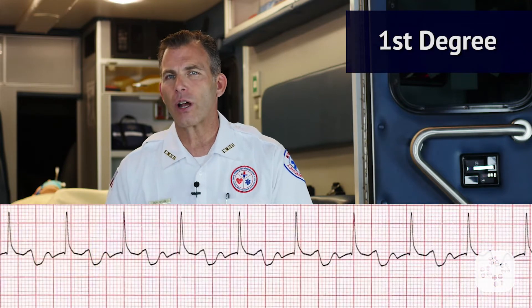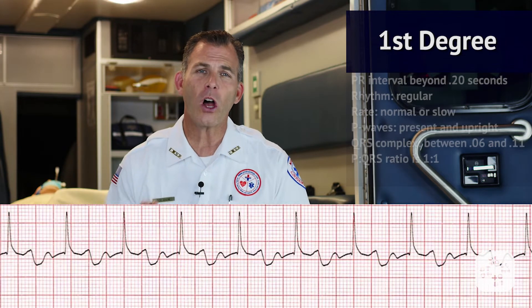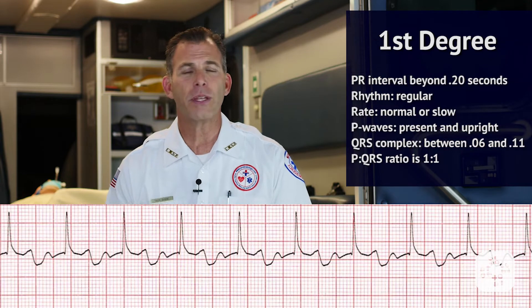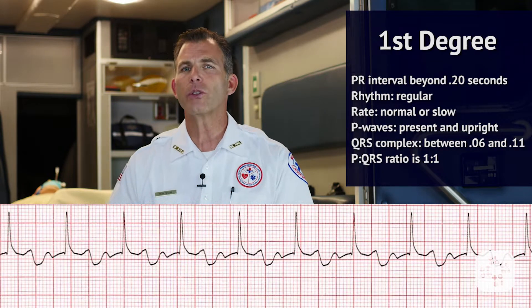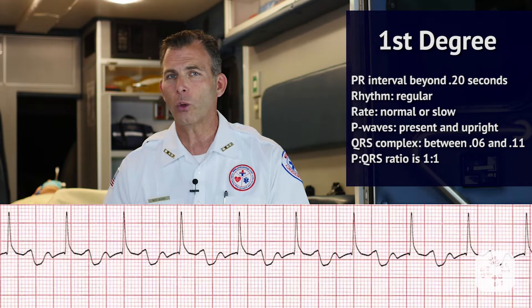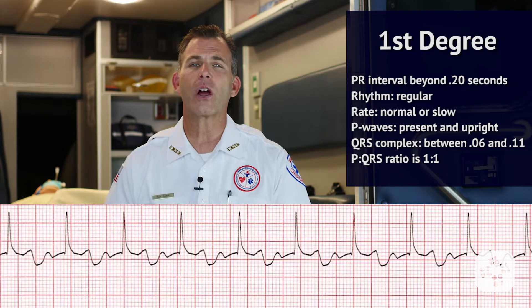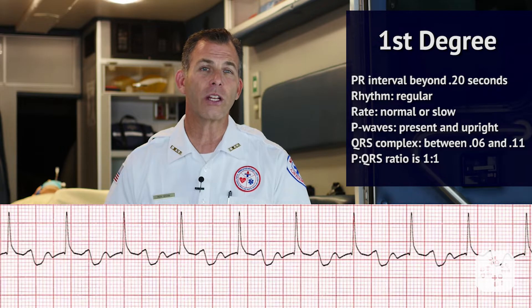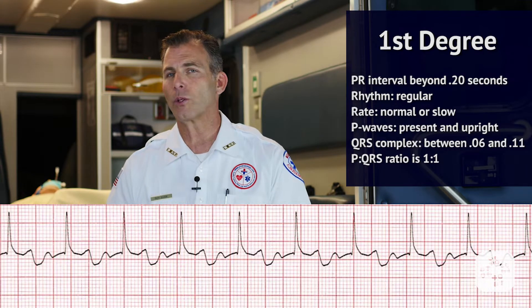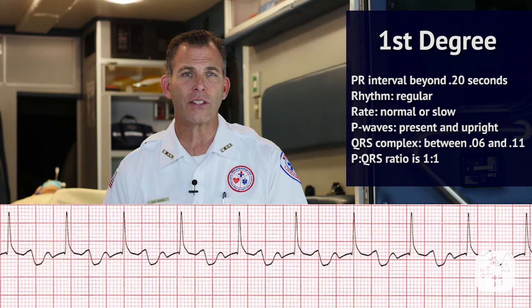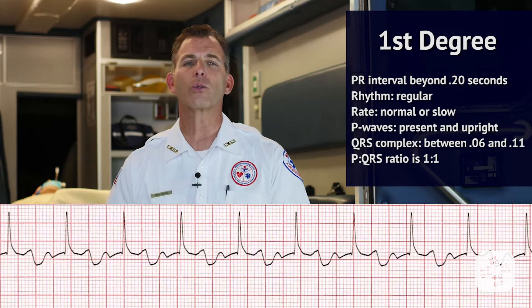First degree AV block is described as having a prolonged P to R interval beyond .20 seconds. The rhythm is regular with a normal or slow rate. P waves are present and upright with a P to R interval greater than .20 seconds. The QRS complex is between .06 and .11 seconds and the P wave to QRS ratio is 1 to 1.